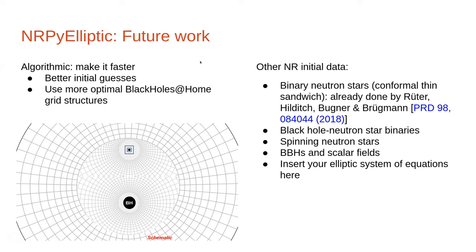On the application side, it has already been done for binary neutron stars using the conformal thin sandwich approach — this was done in the paper where they introduced the hyperbolic relaxation method. We envision other applications: BNS or black hole-neutron star binaries, spinning neutron stars, binary black holes coupled to scalar fields, which has gathered interest from a lot of people. We want the solver to be flexible enough so that you can use it to implement your own elliptic equations.